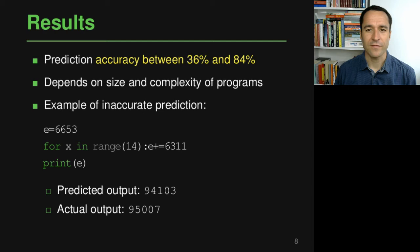What the authors find is that they can achieve a prediction accuracy between 36 and 84 percent, which means that the model works sort of, so it's not perfect, of course, but in many cases it can actually accurately predict the output that is going to be printed by one of these simple Python programs. The accuracy depends heavily on the size and complexity of programs. Programs that do not have loops, for example, are easier than programs that do have loops, and longer programs tend to be much harder to predict than shorter programs.